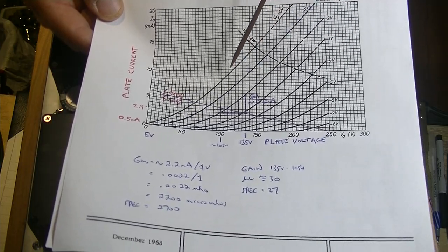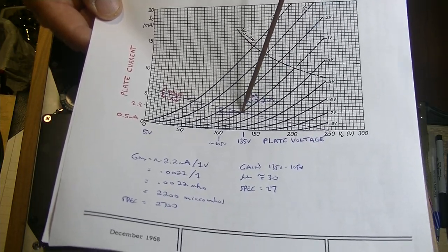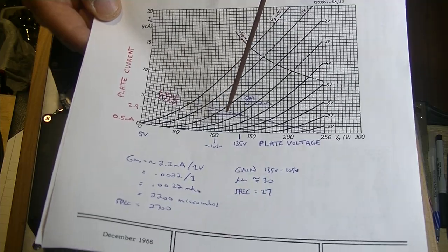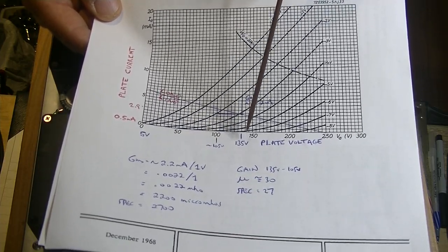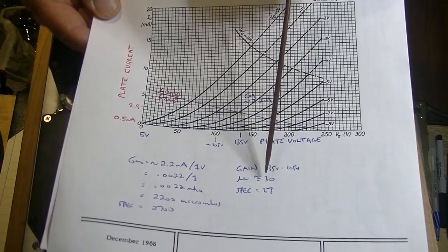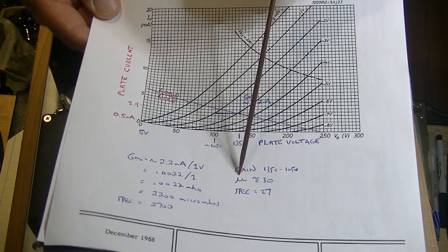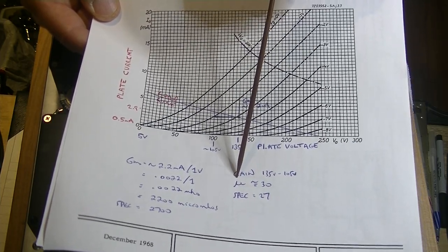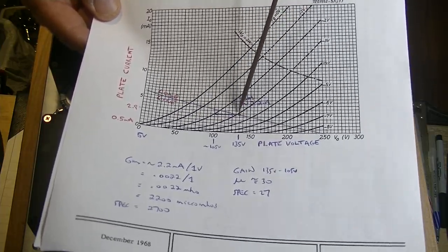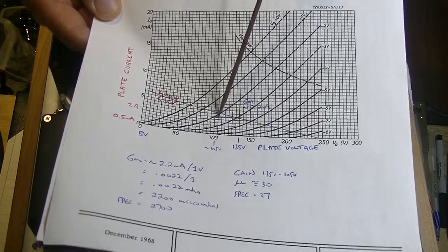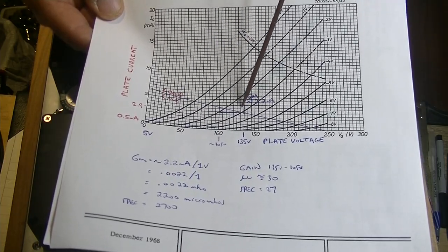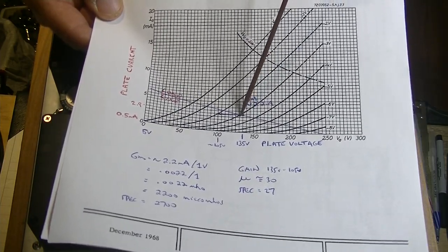To measure the gain, we just simply measure across on the horizontal here to the next grid line and subtract the difference in voltage. In this case, we've got 135 volts minus 105. That gives us a mu or gain of approximately 30. The spec says 27. The definition on these squares is not that great. One square is five volts.